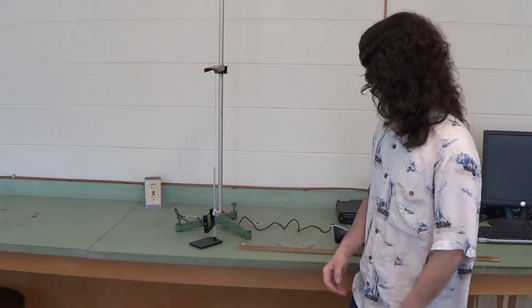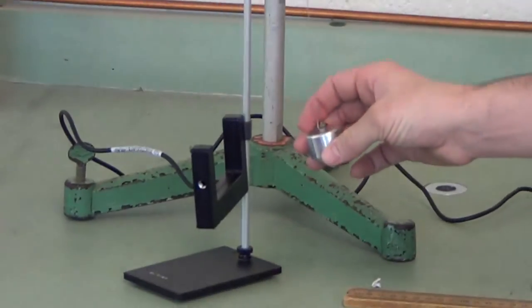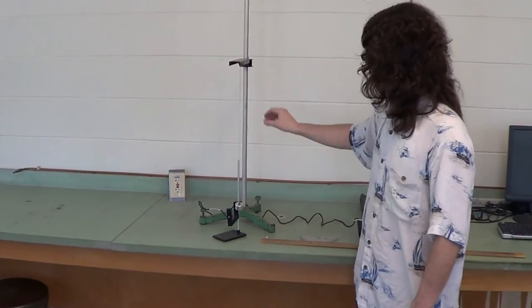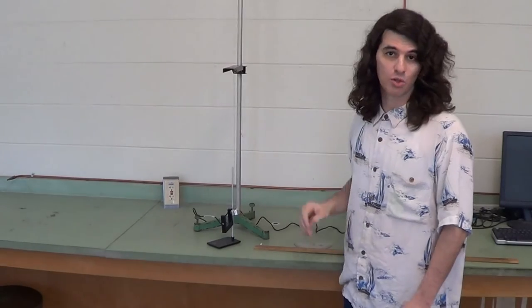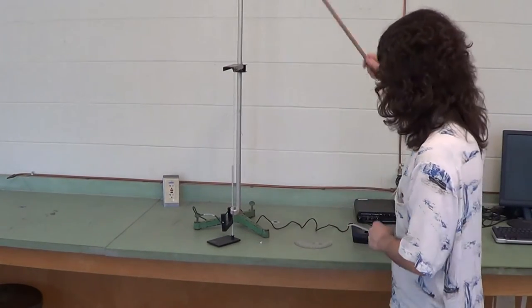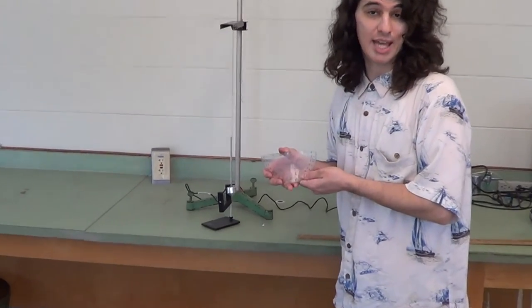The pendulum lab consists of some rather simple equipment. Mainly, we have the photo gate, a plumb bob, obviously the string which we can adjust the length of, the stand which we can also adjust the height of in accordance with the string length, a meter stick which we use to measure the pendulum length, and finally, a protractor which we can use to set the amplitude.